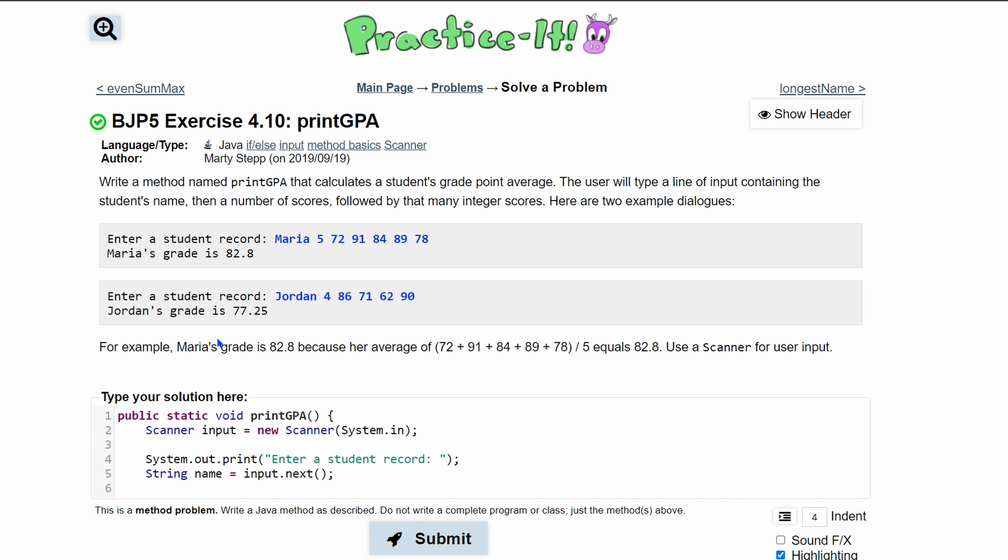Now the next thing we're receiving is the line of input containing the number of scores. If this is five, we're going to have five scores. If this is four, we're going to have four scores. So we need to store that inside of something. To calculate GPA, we can see that we have this.